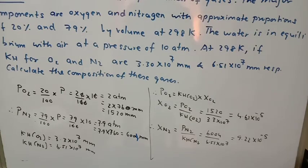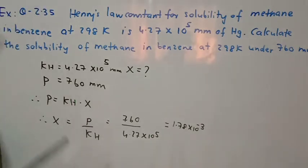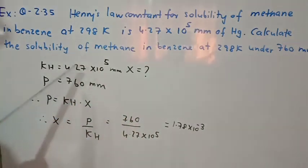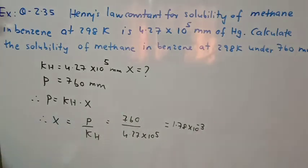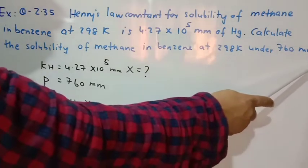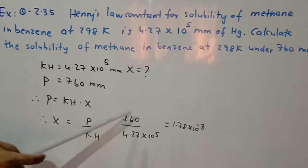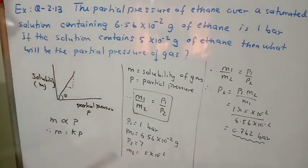Now exercise question 2.35 — a very simple Henry's law question. The solubility of methane in benzene at 298 K is given in mmHg as KH directly. We need to calculate the solubility, meaning we need to find χ, under a pressure of 760 mmHg. Equation: P = KH × χ, so χ = P / KH = 760 / KH. It is a straightforward substitution.